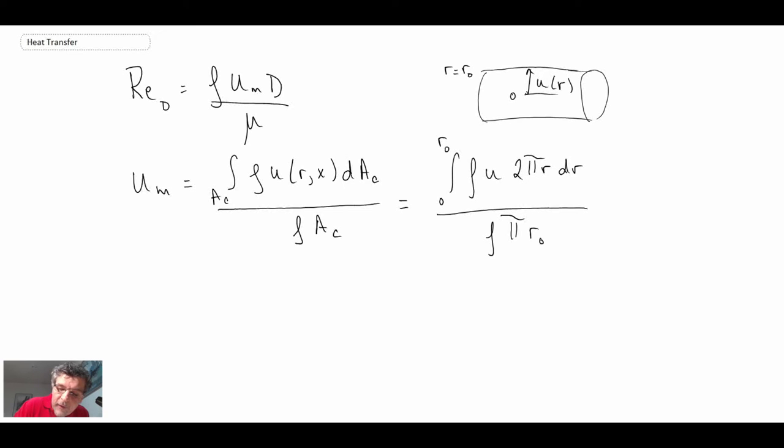And so immediately what we can see here is a few of these terms are going to cancel out. Density is gone, pi is gone, and so this expression will simplify somewhat. So that then becomes an expression for the mean velocity in our pipe flow.